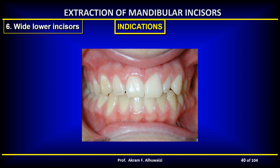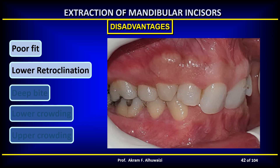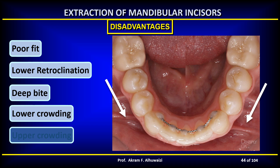Wide lower incisors with a Bolton mandibular anterior excess of 4 mm or more — meaning wide lower incisors and relatively narrower upper incisors — are also an indication. The disadvantages of extracting lower incisors include: it is not possible to fit all four upper incisors over three lower incisors; you will lose the midline and will have to accept either increased overjet or some crowding in the upper arch to obtain a canine class 1 relationship. You also get retroclination of the lower incisors accompanied by deep bite.